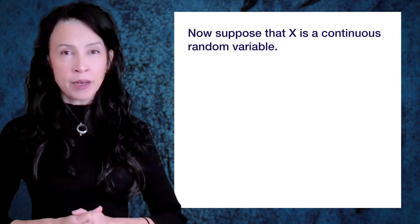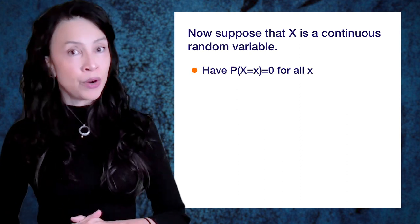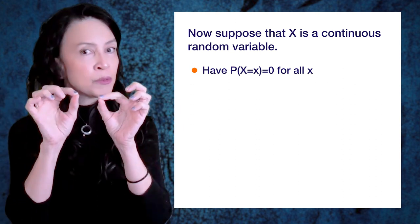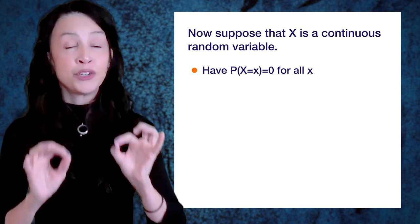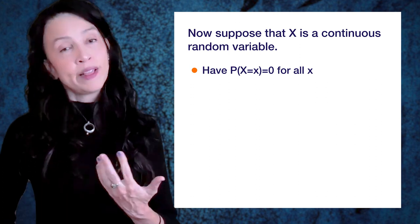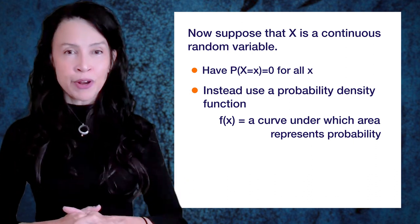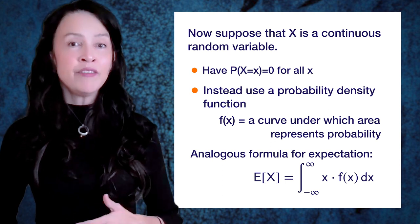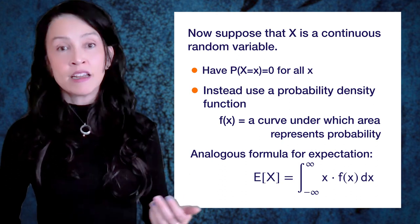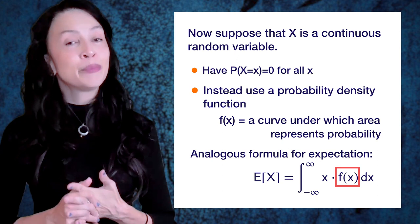Suppose now that X is a continuous random variable. The probability that X equals any one particular number is always zero, because there are just too many possibilities. We're going to use the formula from the last slide - the sum with the probability mass function f(x) in it - but we're going to replace that f(x) with the probability density function for a continuous random variable, and swap out the sum for an integral. Here I've integrated over the whole one-dimensional space from minus infinity to infinity, but your random variable might only take on values from 0 to 1 or negative 1 to 10. The PDF should take care of it - it'll be zero in the places you need it to be zero.